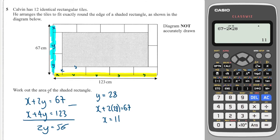Okay, so I've got to work out the area of the shaded rectangle. So the area of the shaded is the total rectangle, which is 67 multiplied by 123, minus 12 of the smaller rectangles, which we know are x times y. So 11 times 28.